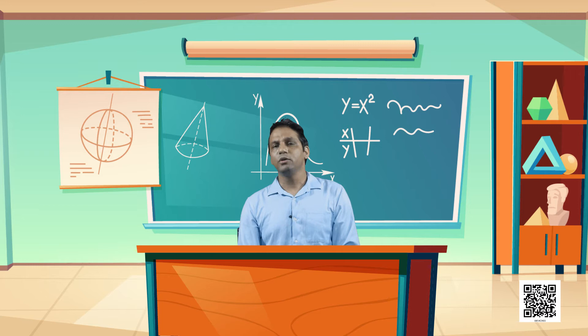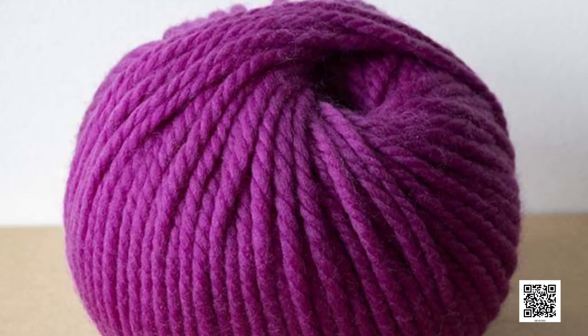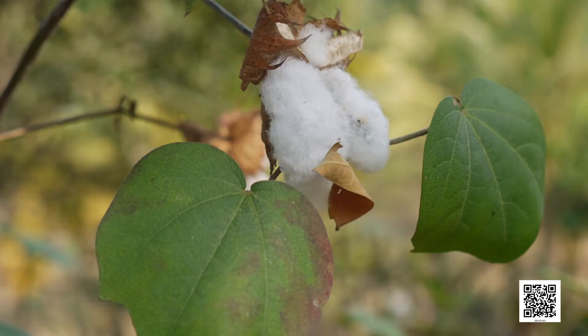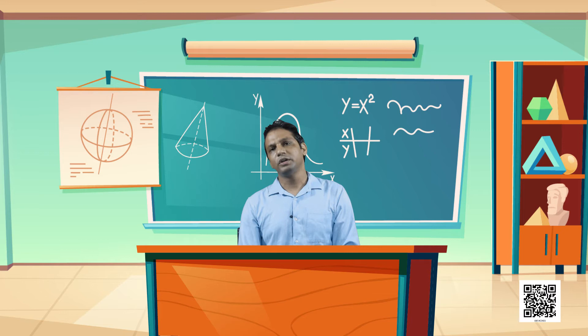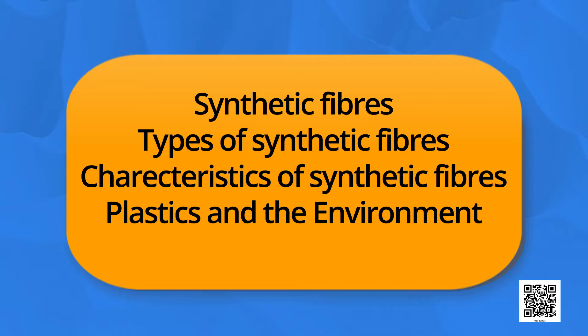Can you name some of the natural fibers? The answer is: wool, cotton, jute and silk. So students, you already know about the natural fibers. Today we are going to learn about synthetic or man-made fibers in detail.